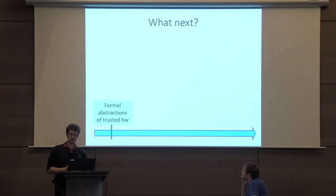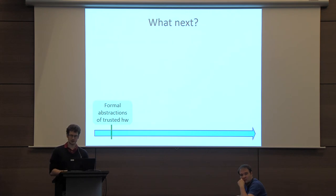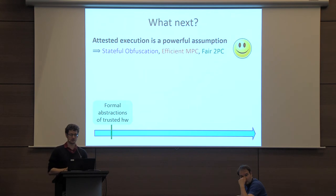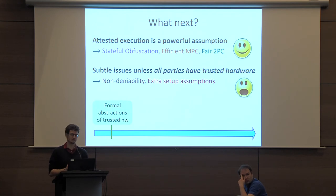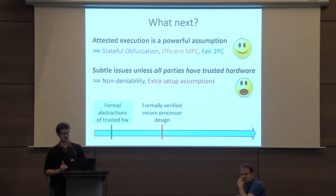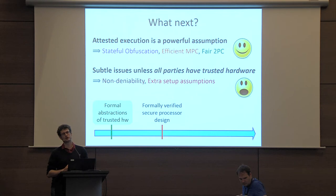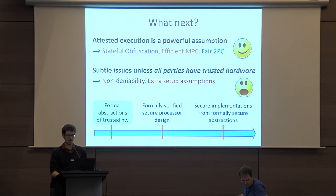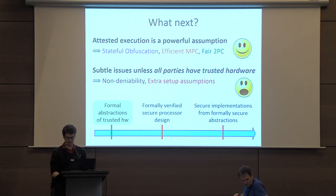Let me conclude by looking at future directions. In this work we've looked at formal abstractions of trusted hardware. We've shown that attested execution is a very powerful primitive that allows us to do a lot of interesting things, but there are also subtle issues that arise because keys are shared across all protocols. The next logical step is to come up with a secure processor design that could be formally verified to actually implement a precise formal abstraction, which would then allow us to get provably secure implementations of systems on top of trusted hardware.